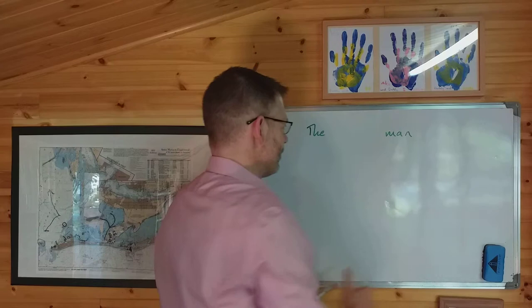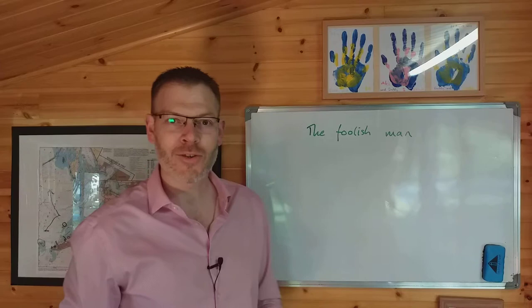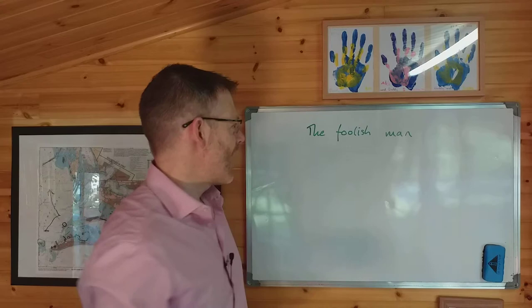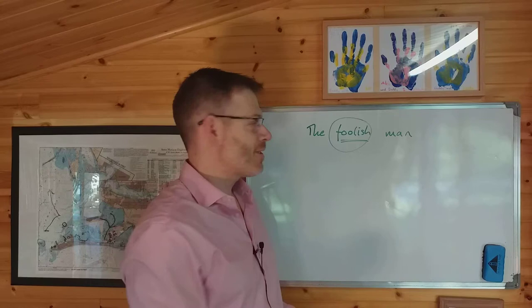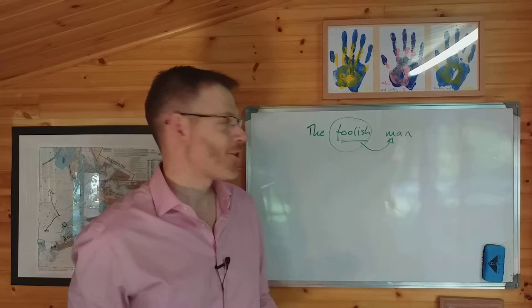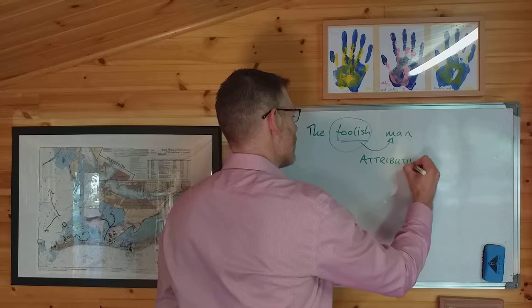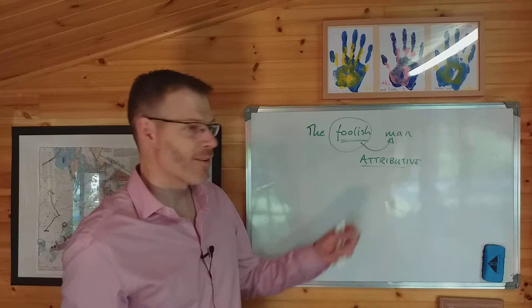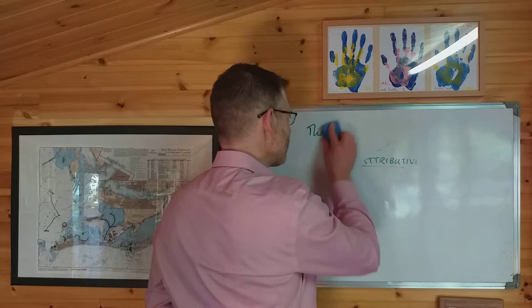All of these are different ways of using adjectives, and these correspond to the three different ways in which adjectives are used in this chapter. The first way is called the attributive use of the adjective. It's called attributive because the adjective, for example 'foolish' in 'the foolish man,' describes an attribute of the noun that it modifies. That's the first and most simple and obvious way in which an adjective can be used.